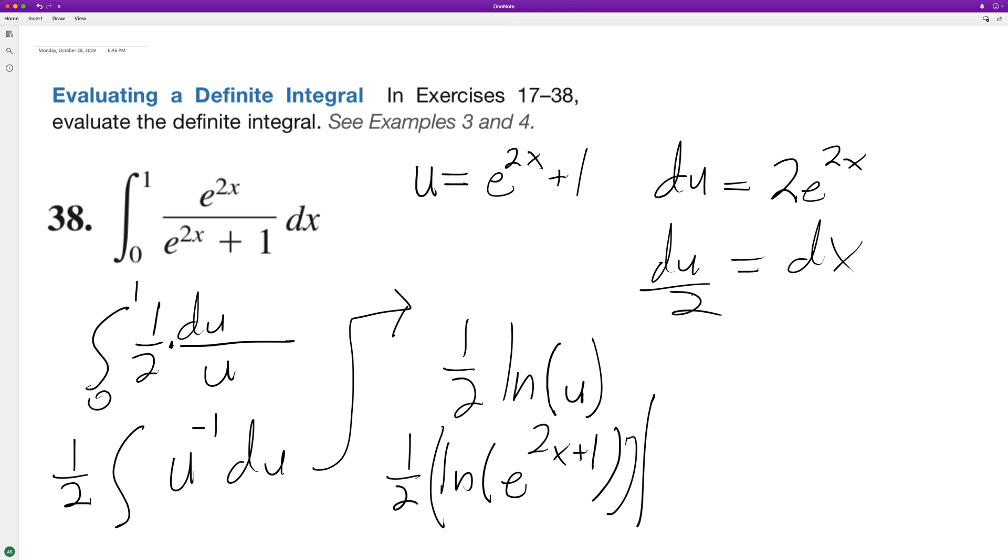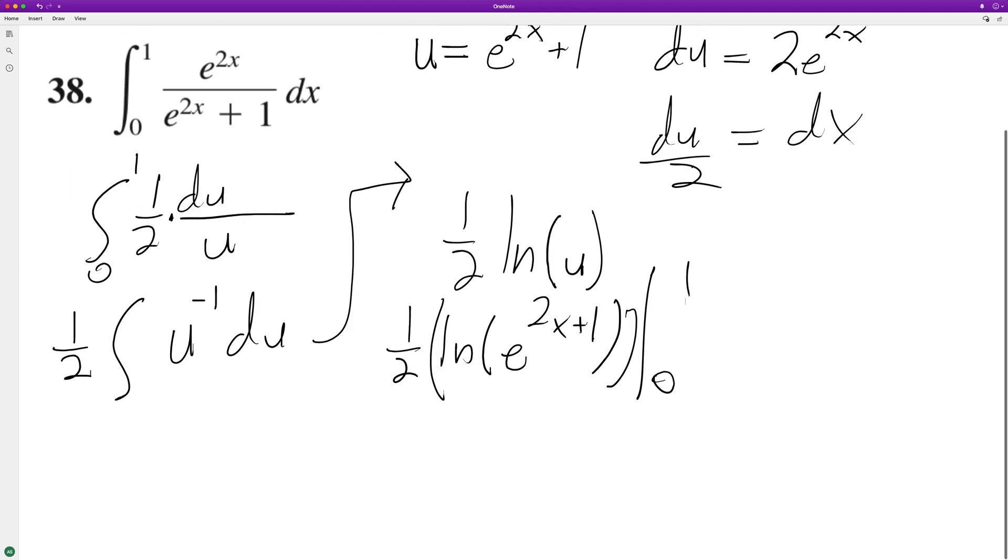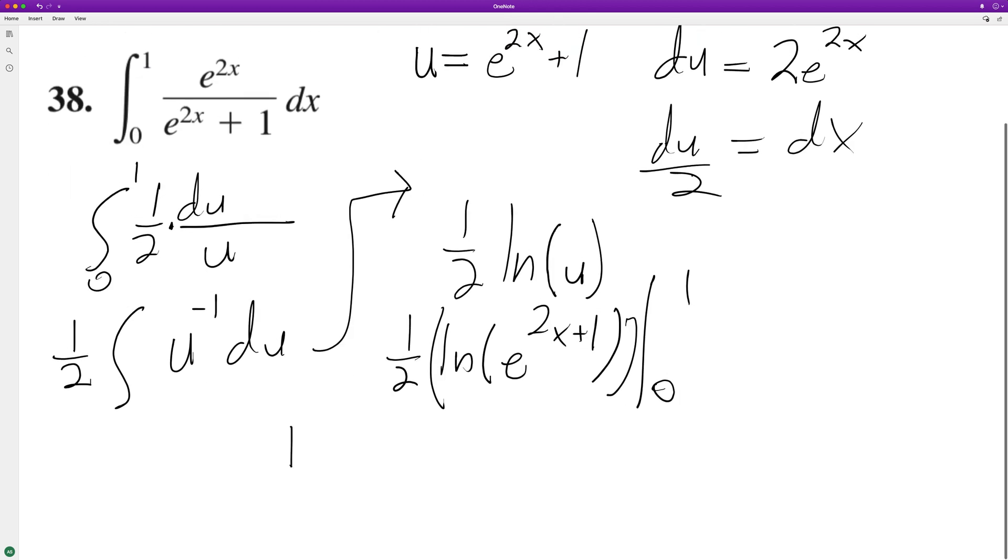So then we can go ahead and take this from 0 to 1. So what that's going to be is we'll have one half, and then we'll have the natural log of e raised to the 1, or e raised to the 1, so this is going to be 2 plus 1, so e raised to the 3rd, minus natural log of e.